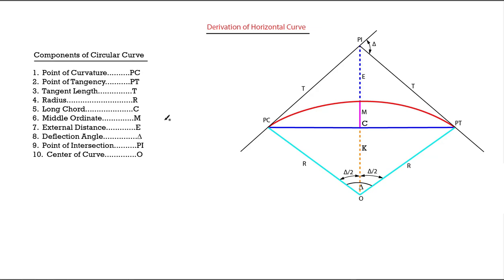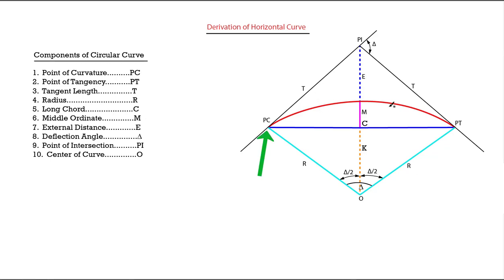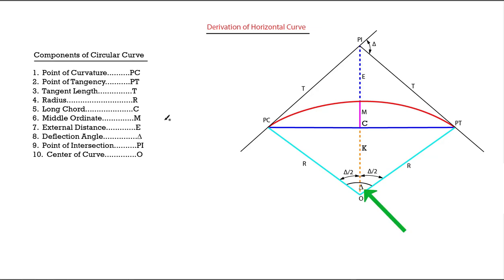The components of the simple circular curve are: the point of curvature (PC), the point of intersection (PI), the point of tangency (PT), the central angle, also called the deflection angle, the radius of the curve, the tangent length — which is the distance from PI to PT — and the external distance, which is the distance from PI to the middle of the curve.